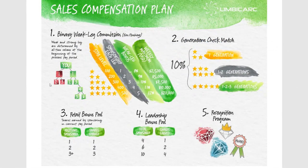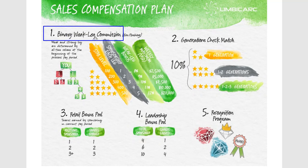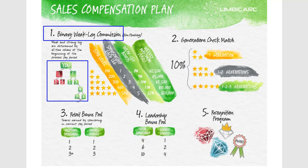This is called a binary compensation plan. Binary means two — like a bicycle has two wheels, binary has two legs. So this is your left leg and this is your right leg. When you share this with someone and they say yeah, I want to be a customer, they can only go on your right leg or left leg.